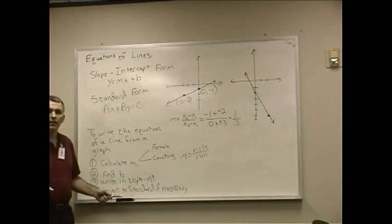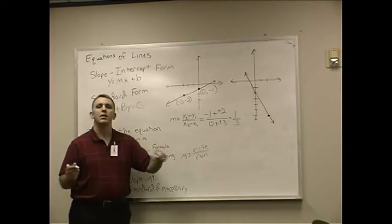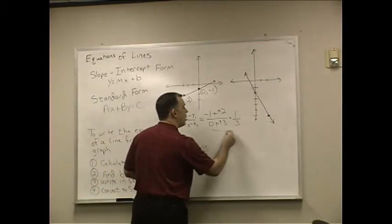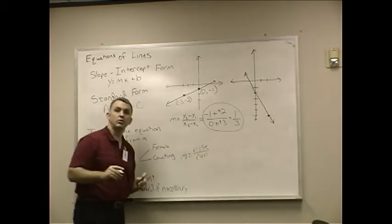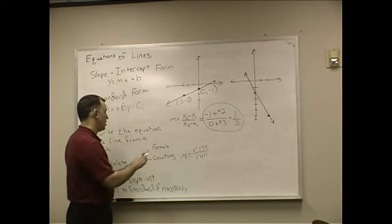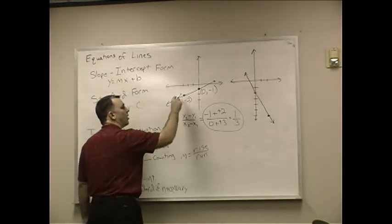And then the second thing is finding b. Oh, I forgot. I was going to tell you how to count this versus going through all of this nasty arithmetic, which is easy to make a mistake on, as I just showed. All right. The slope is also rise over run.